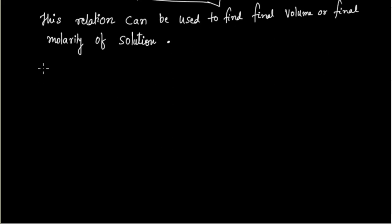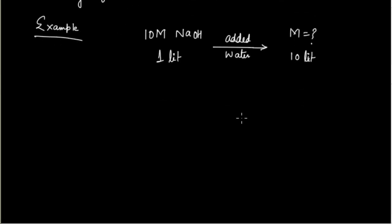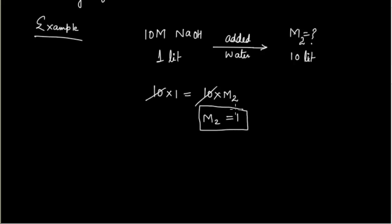Let us look at an example. We have a 10M NaOH solution with an initial volume of 1 liter — this is a concentrated solution. We add water so that the final volume becomes 10 liters. What is the final molarity? Applying M1V1 = M2V2: 10 × 1 = M2 × 10, so M2 = 1M. If you decrease the volume 10 times by dilution — sorry, increase the volume 10 times — molarity reduces 10 times.